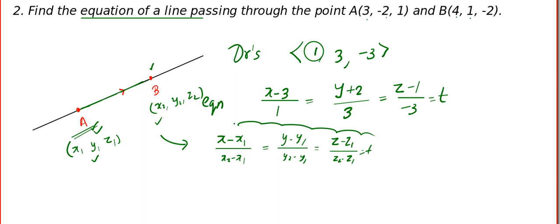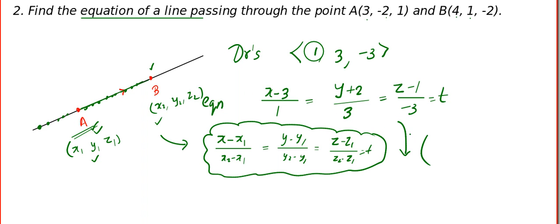If you feel like memorizing this as the formula, that is a very good idea. Now, how do you convert this into parametric form? Parametric form means you should be really happy because it gives us access to each and every point on the line. Knowing the parametric form means you know every point on the line. So the parametric form is: x equals t plus 3, y equals 3t minus 2, and z equals minus 3t plus 1.